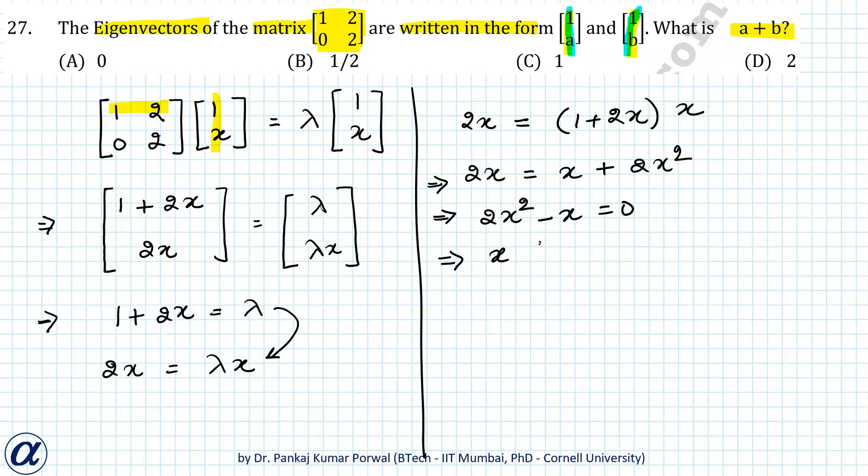Taking x common, I get x times (2x minus 1) equals 0, so x is 0 and 1/2. One of them will be a and another one will be b.